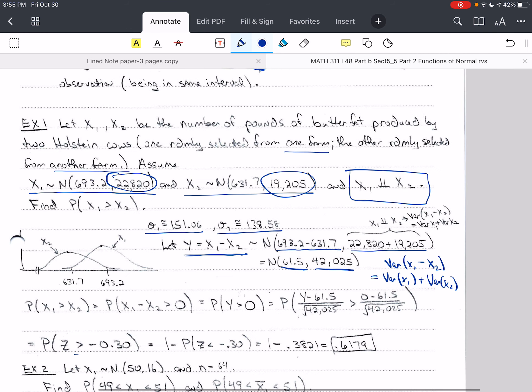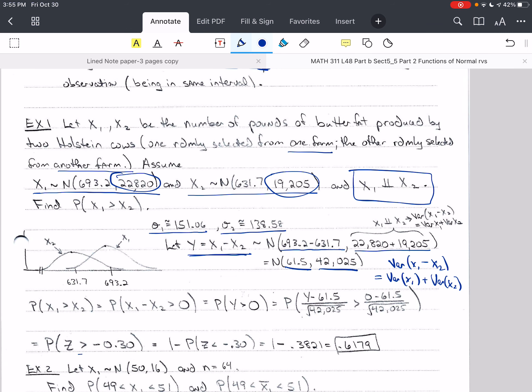Now, let's find the probability that x₁ is larger than x₂. So what do we do? We need this in terms of y. So we take x₁ minus x₂, and when we subtract x₂ from both sides, we get x₁ minus x₂ is greater than 0.